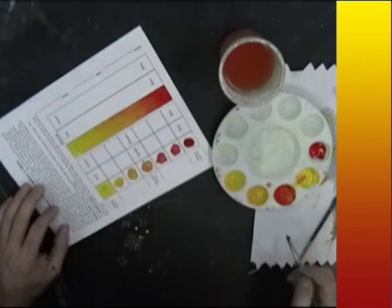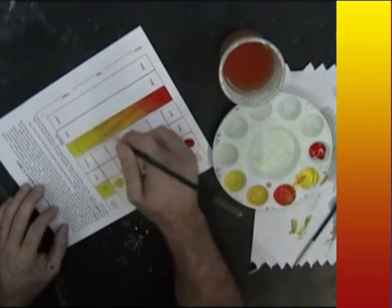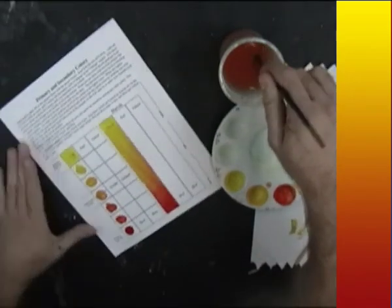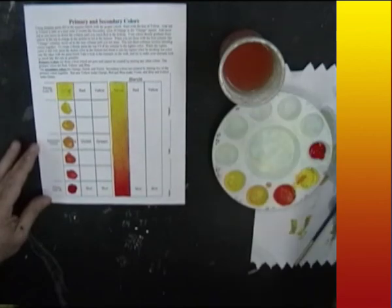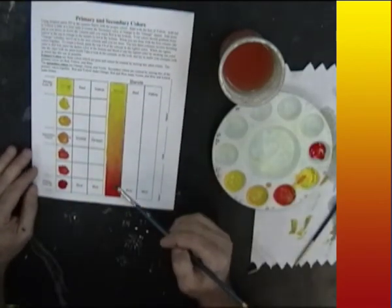You'll want to have a continuous gradual flow where your column goes from yellow to red smoothly and gradually like the column that is shown here. Also notice the orange tones that are created in the middle by blending the two colors together.